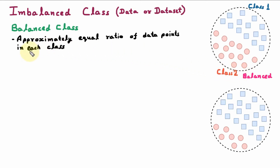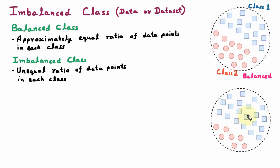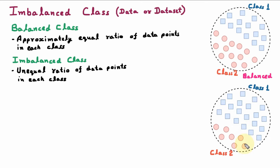Next, we are learning Imbalanced Class. Imbalanced class contains unequal ratio of data points in each class. Here in the diagram, we have class 1 which contains squares and class 2 which contains circles. The number of squares are much more than the number of circles, so this is called Imbalanced Class, Data or Dataset.